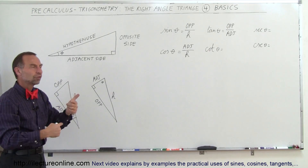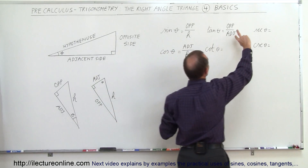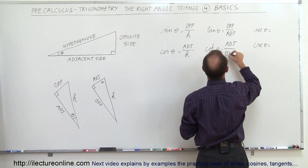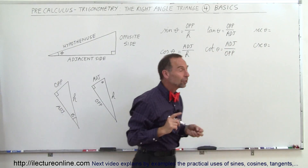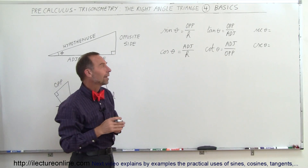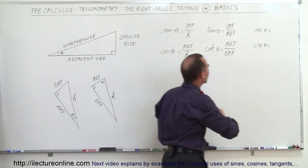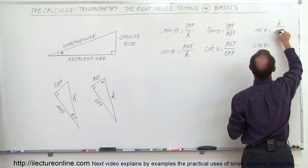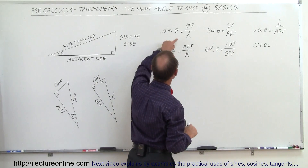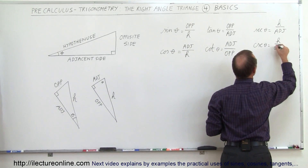The cotangent of theta is the inverse of the tangent — simply the tangent flipped over. So the cotangent of theta is the ratio of the adjacent side divided by the opposite side. Finally, the secant and the cosecant: the secant is the inverse of the cosine, so we flip the cosine to get H divided by the adjacent side — hypotenuse divided by the adjacent side. The cosecant of theta is the inverse of the sine, giving us H divided by the opposite side — hypotenuse divided by the opposite side.